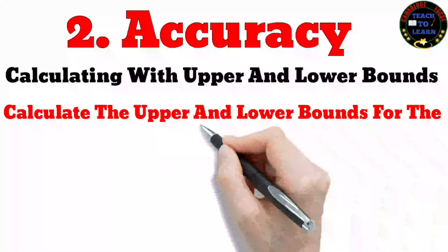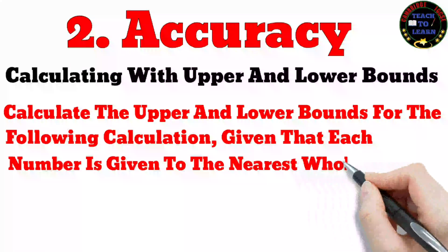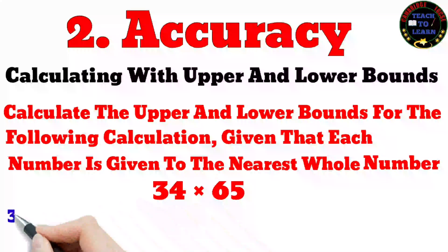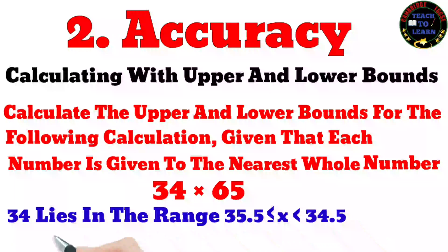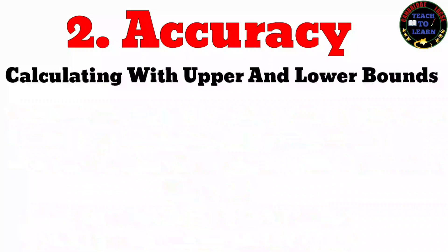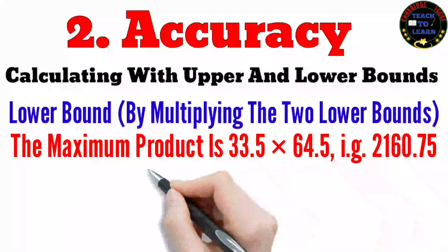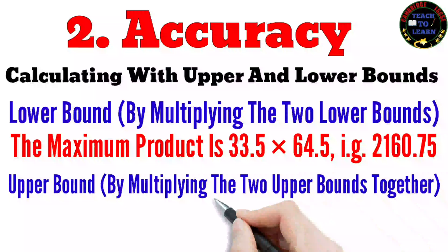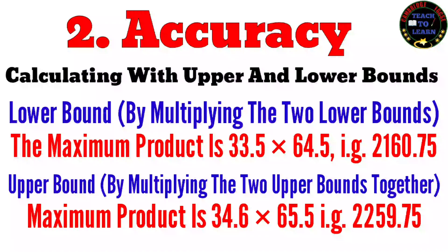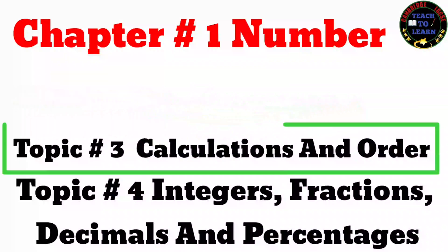Example: calculate the upper and lower bounds for 34 × 65, given that each number is given to the nearest whole number. 34 lies in a range and 65 lies in a range. The lower bound is calculated by multiplying the two lower bounds together, and the upper bound is calculated by multiplying the two upper bounds together.